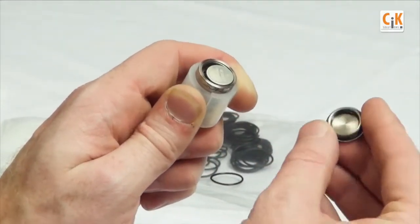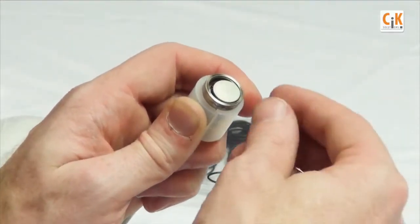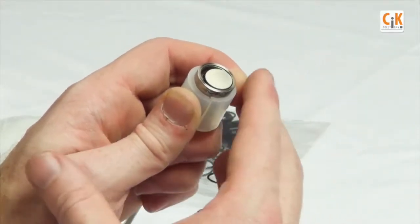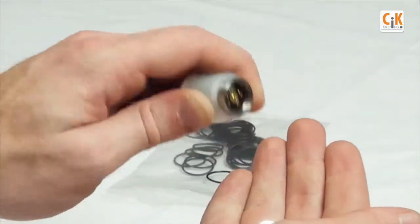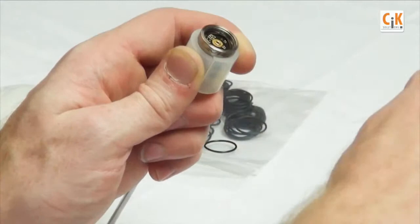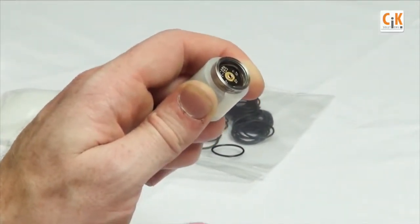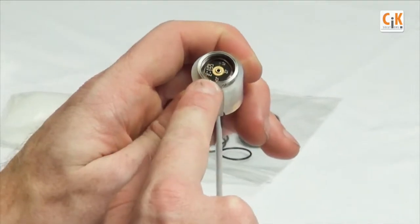Remove the old battery by tipping the logger on its side until the battery falls out. Dispose of the battery appropriately per local regulations. Examine the battery compartment here in the logger and the cap.